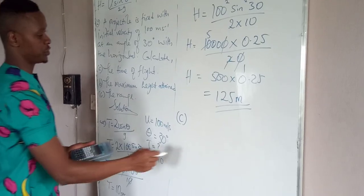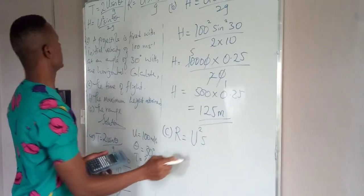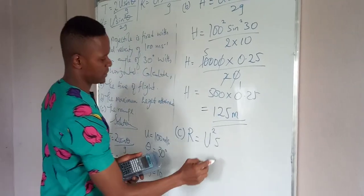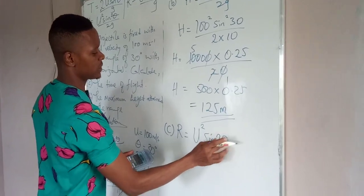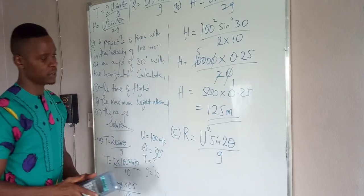And then finally, the range r is u squared sin 2 theta all over g.